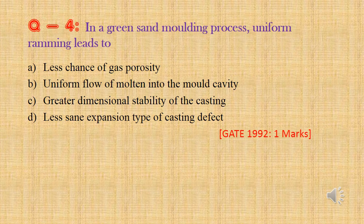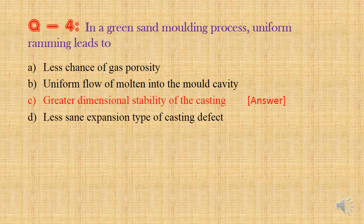Question 4: In a green sand molding process, uniform ramming leads to — Option a: Less chance of gas porosity, Option b: Uniform flow of molten metal into the mold cavity, Option c: Greater dimensional stability of the casting, Option d: Less sand expansion type of casting defect. Uniform ramming will not affect the porosity — only too much ramming will affect the porosity. And uniform ramming will not cause a casting defect. Uniform ramming supports dimensional stability. So the answer is Option c: Greater dimensional stability of the casting.